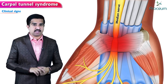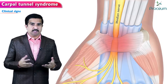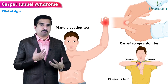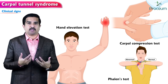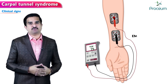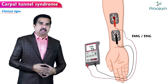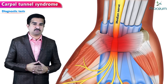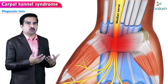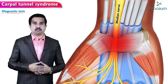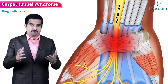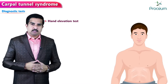Clinical tests for carpal tunnel syndrome include the hand elevation test, carpal compression test, and Phalen's test. Positive results on these tests raise suspicion, but diagnosis must be confirmed with specific neurological tests like EMG or nerve conduction studies. There is no consensus on which single provocative test to use; several authors recommend combining two or more provocative tests to improve diagnostic specificity.